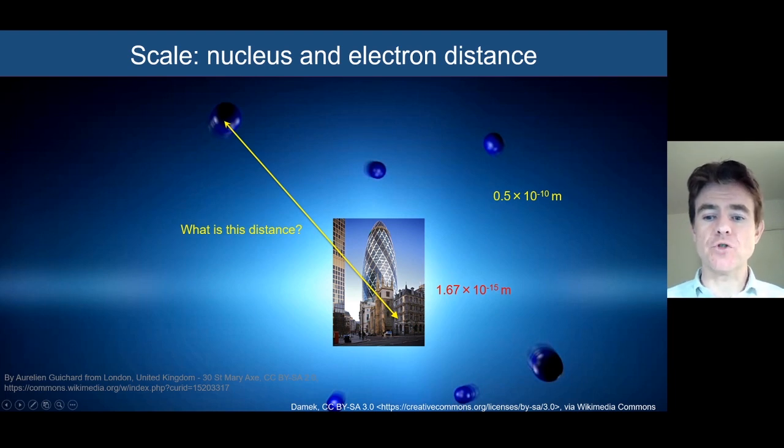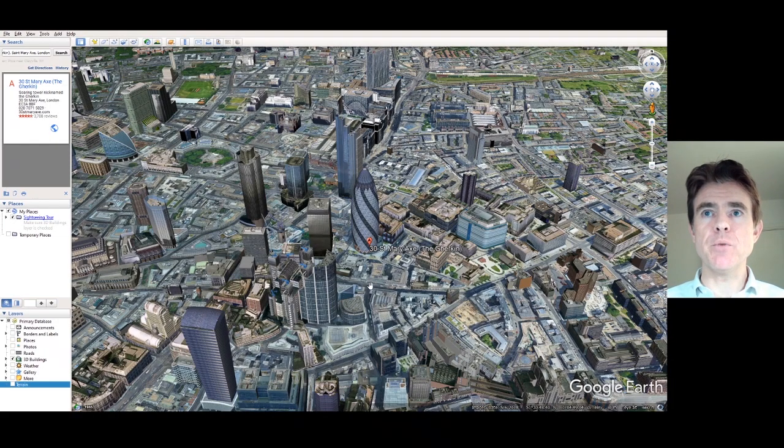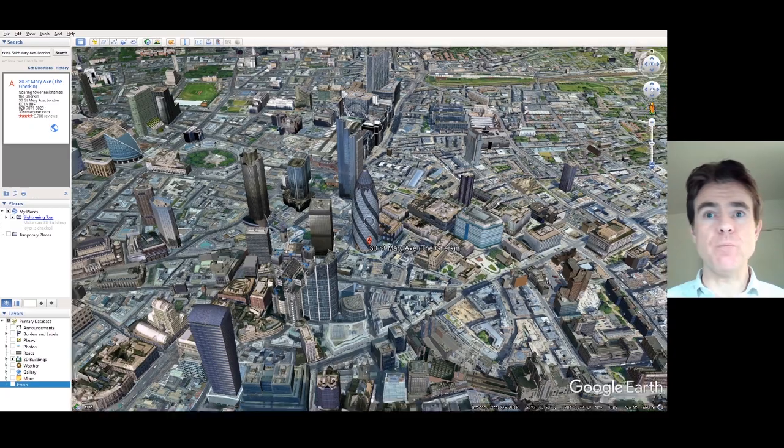To try and get an idea of how far out that electron is, I'm going to use Google Earth. There is the Gherkin building. Just to point out already, if we look at the entirety of this screen, we would not expect to find the electron located there. We have to zoom much further out.